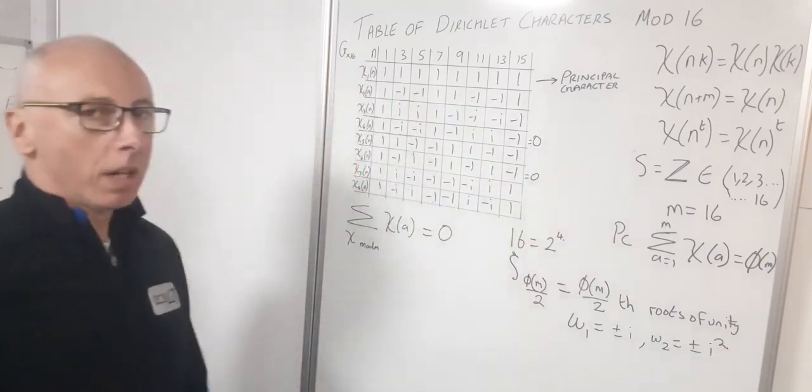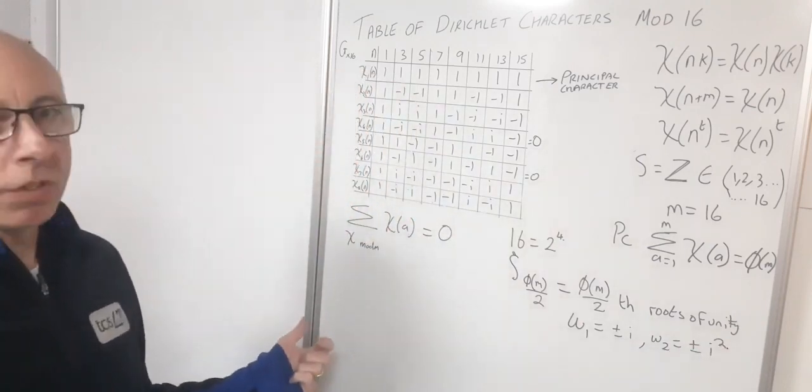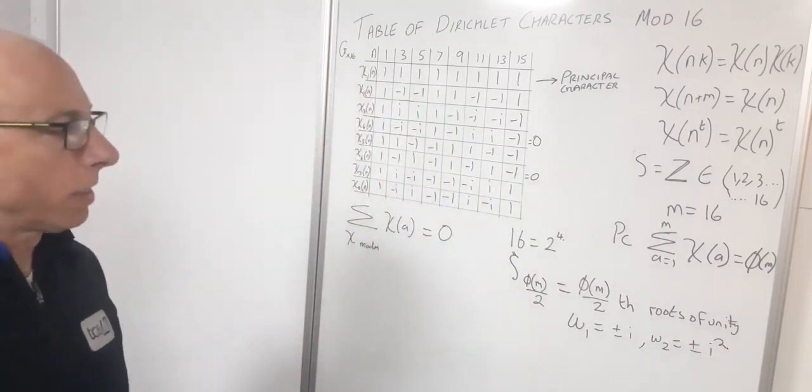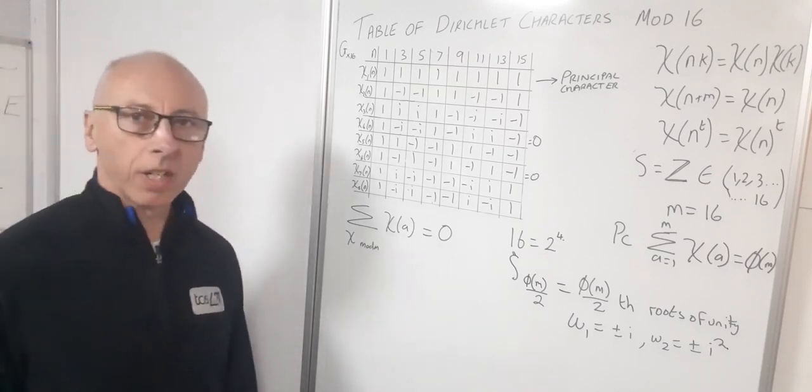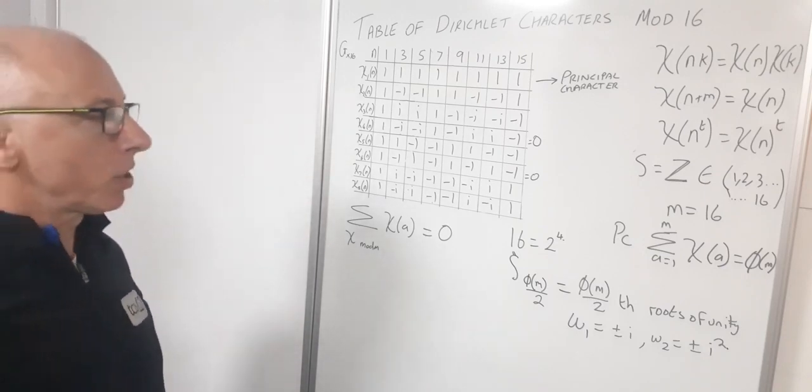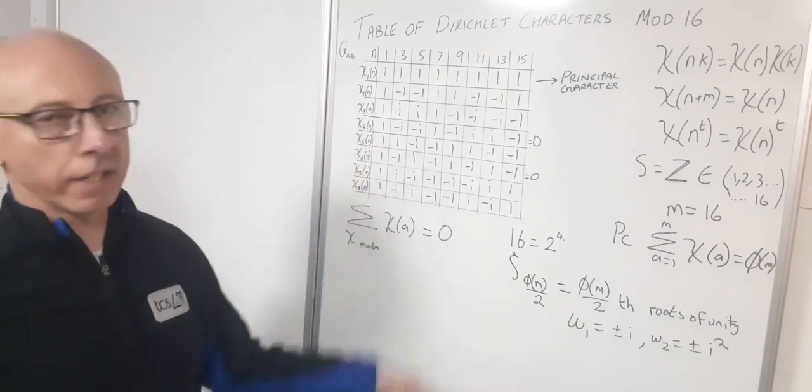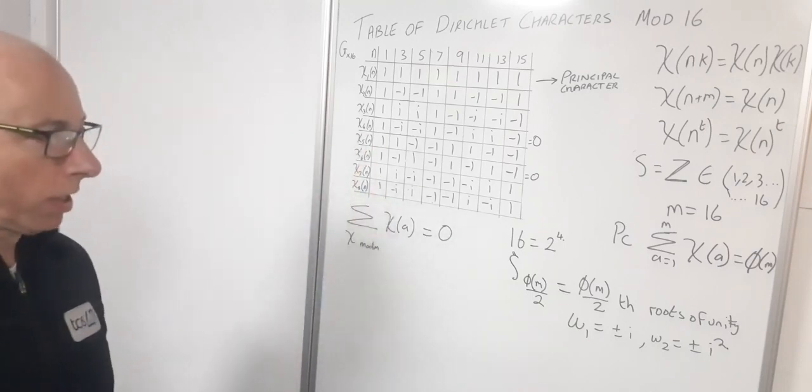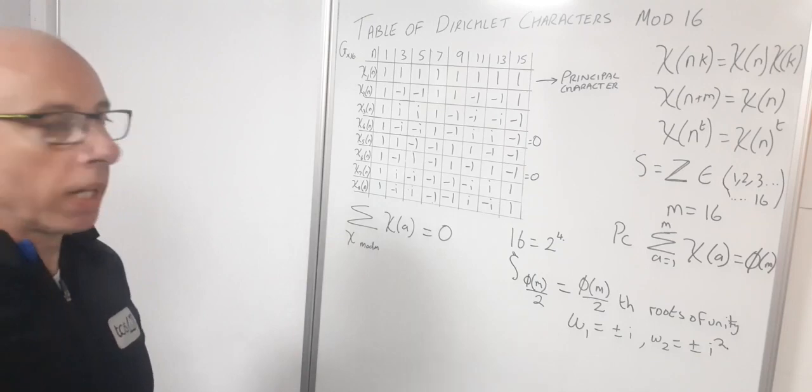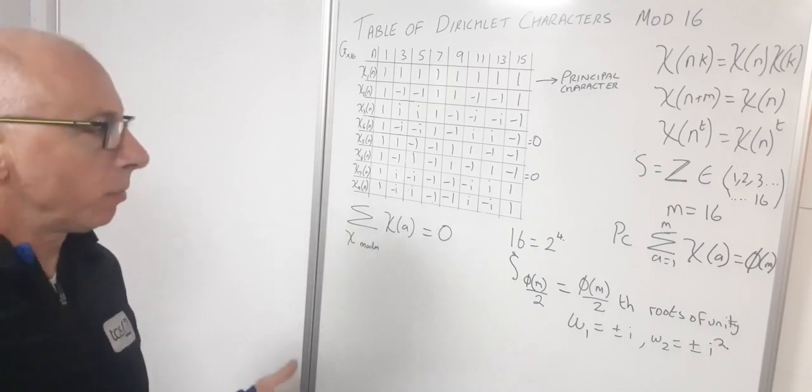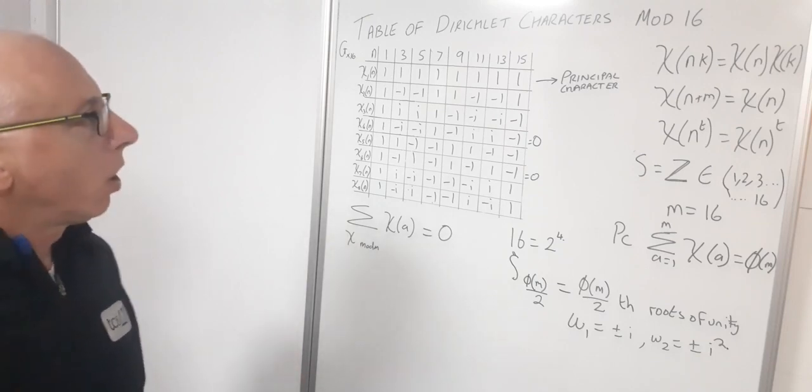So that's how we check our table of Dirichlet characters modulo 16. Now the next video I'm going to do modulo 7, and we'll see what kind of results we get in our table for that one. Keep an eye out on that one. I'll put a link in the description below when we've finished making it.